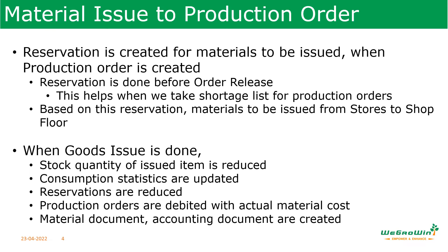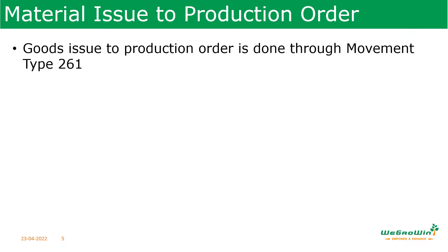When goods issue is done, the stock quantity of the issued item is reduced because we are issuing it from inventory. Consumption statistics are updated in the system, the reservations created are removed, and production orders are debited with actual material cost. Material documents and accounting documents are created — so many activities are carried out during the goods issue. Goods issue is done through movement type 261 to the production order.